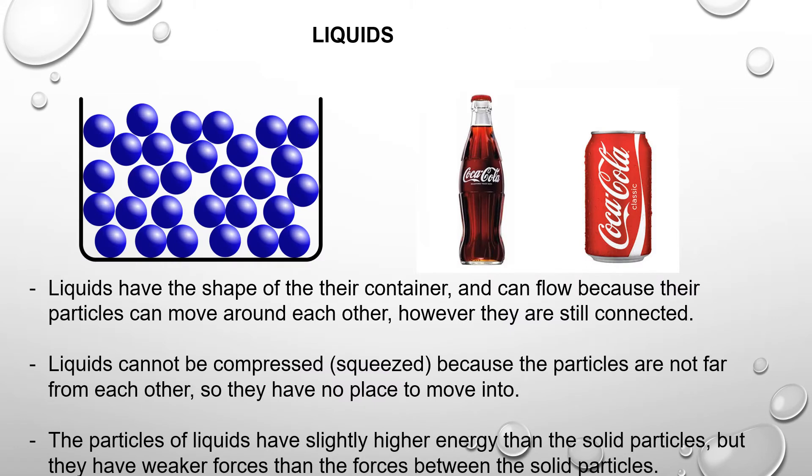We're going to look next at liquids. Liquids have the shape of the container as you can see the bottle of Coke or the can, and can flow because their particles can move around each other. However, they're still connected.